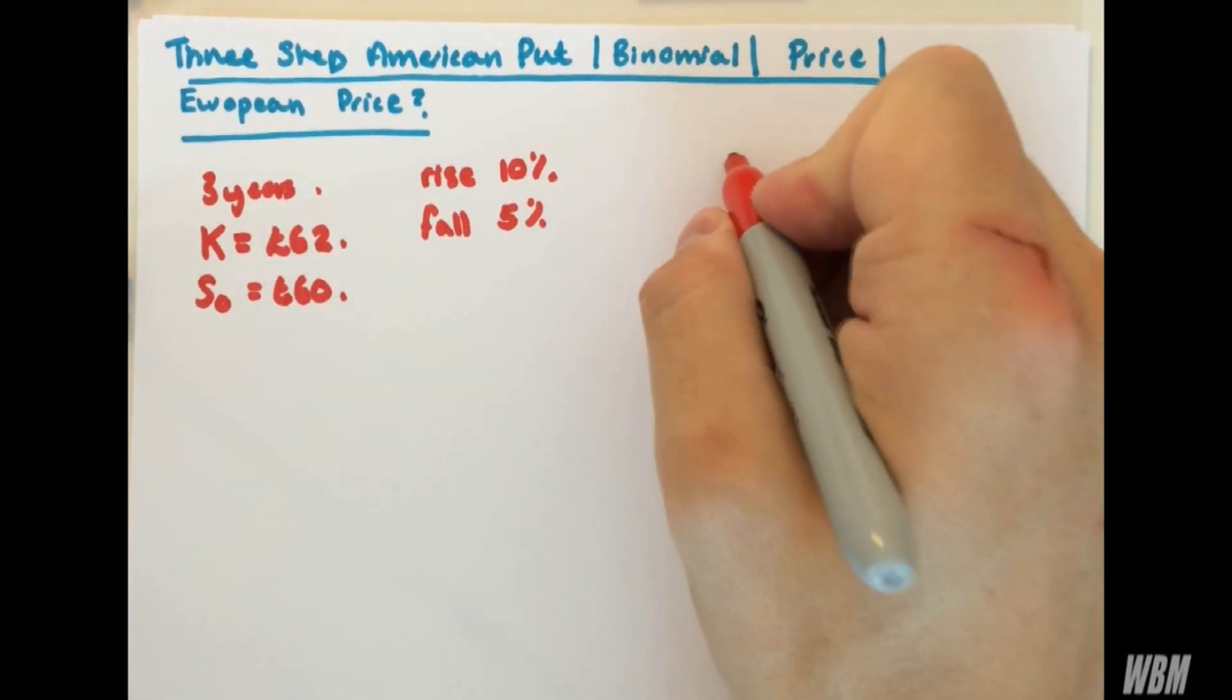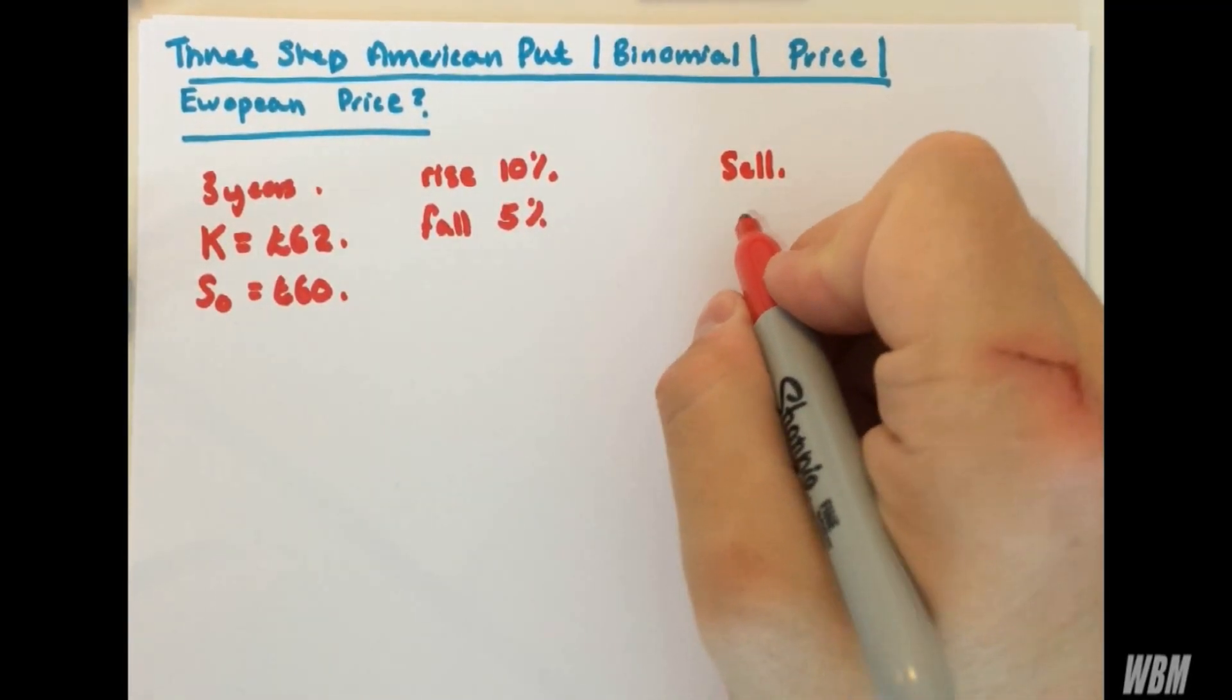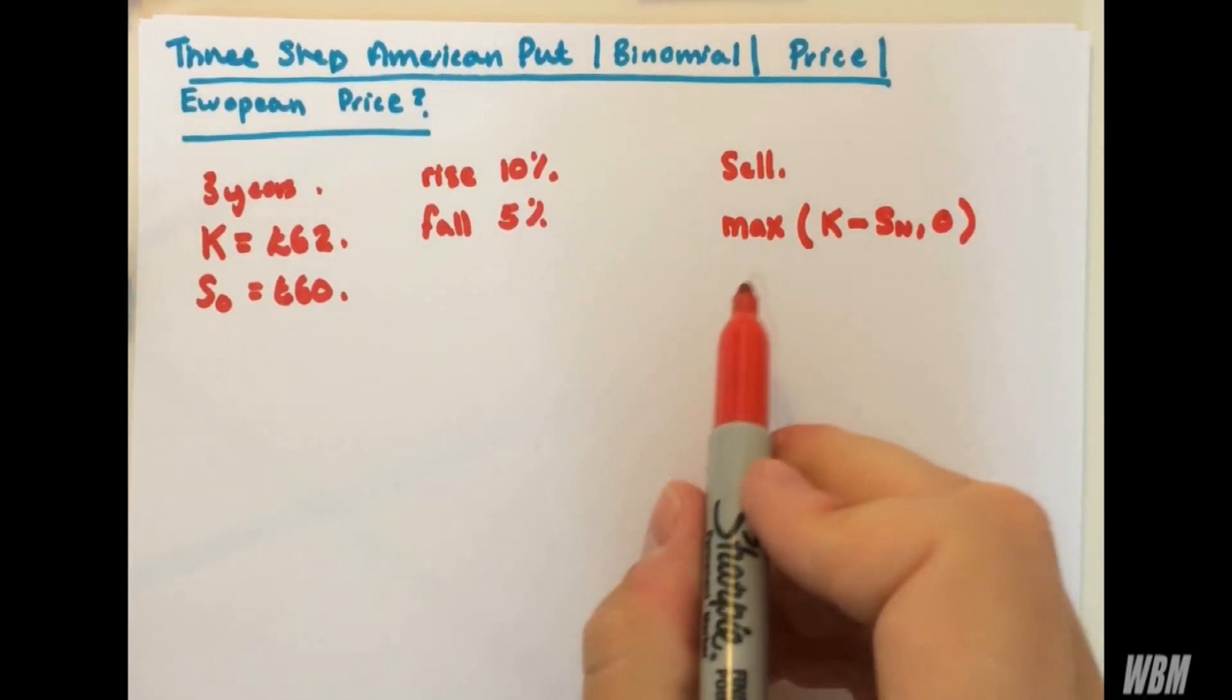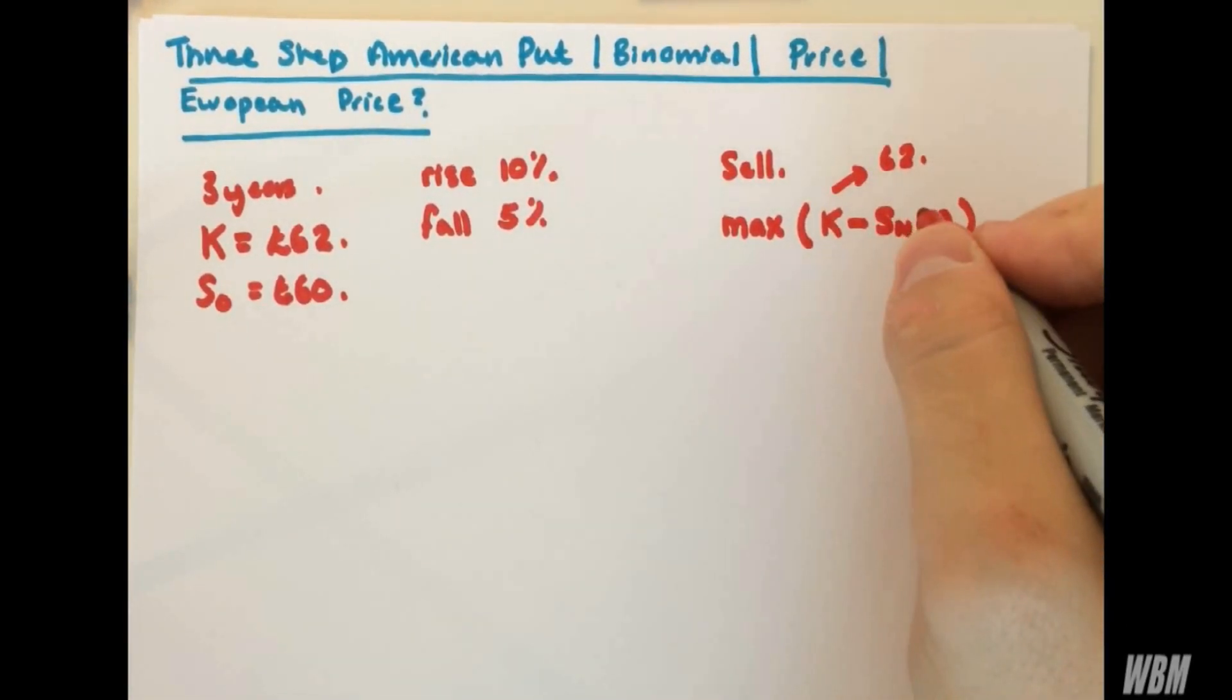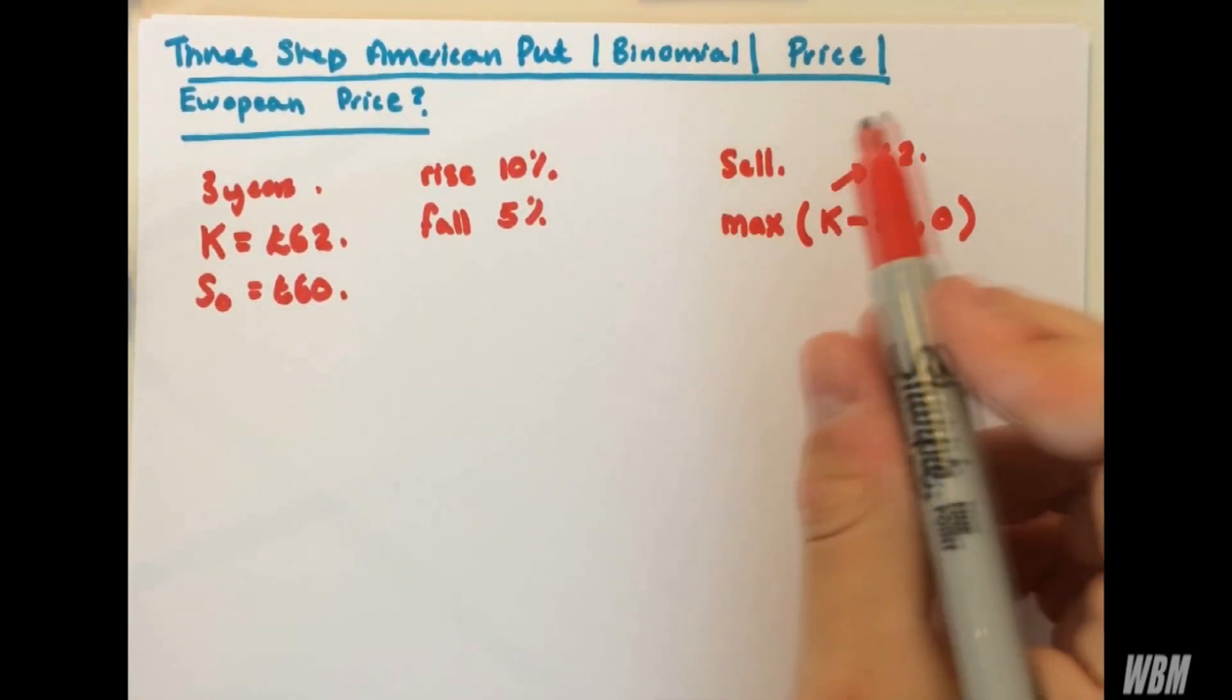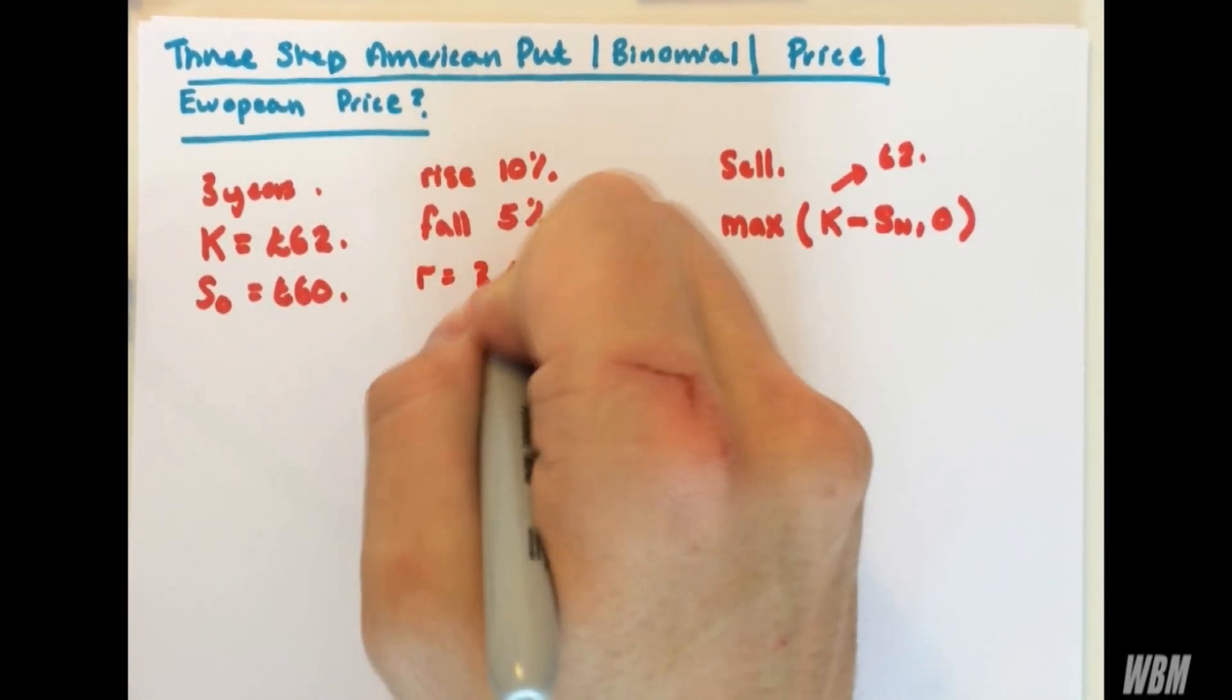As a put option, a put is to sell something. If you want to sell something, you want your K value, so 62, you want that to be larger than the eventual value of the stock. So automatically seeing this rising tendency, I'm slightly worried. We assume the risk-free interest rate R equals 3%.